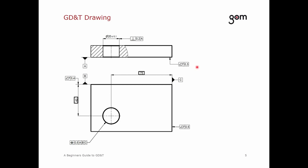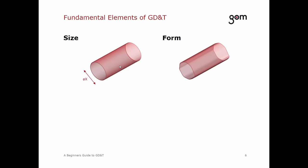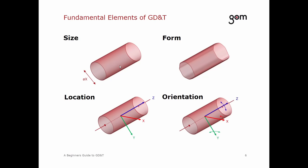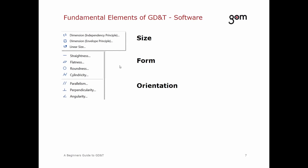Let me explain the symbols. Here we have symbols for flatness, symbols for perpendicularity, symbols for position, and a certain size defined on this drawing. What describes an element regarding its function? First, it's the size. Then the form of an element is important. Of course, the position of the element and also the orientation. These four fundamentals — size, form, orientation, and location — are essential to describe a part regarding its function. You find this structure also in the menu structure in the software.